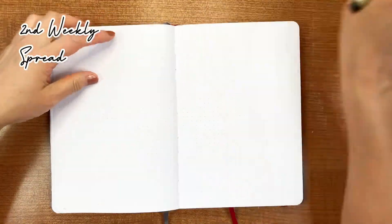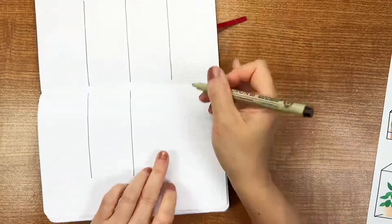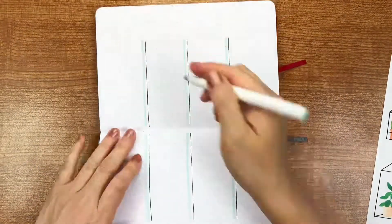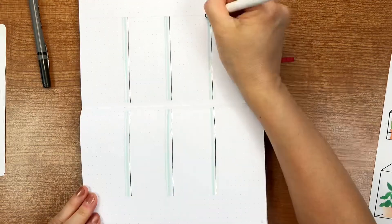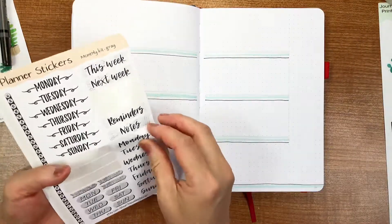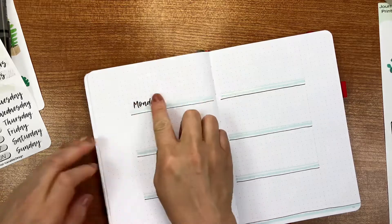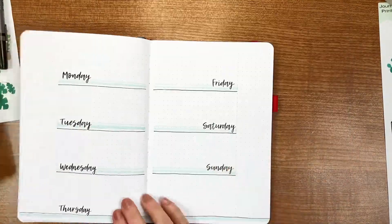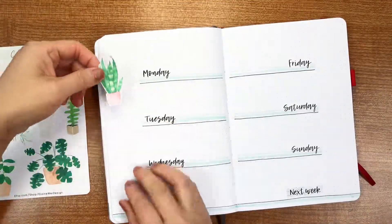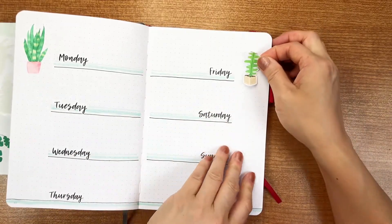Now I'm designing my second weekly spread for this month. Usually I like to try using as many different layouts as possible. It brings me a new perspective and a fresh start every week. I'm still using these days of the week stickers from my gray planner sticker sheet to add the weekly headers onto the pages. Then I'm using two stickers from my sticker sheet to finish this page.